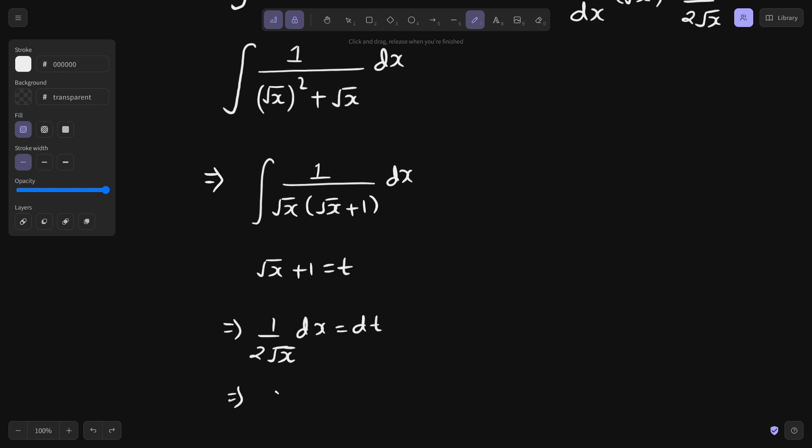So dx by root x can be substituted by 2 dt. So if you look at this step, dx by root x is 2 dt and in the denominator you have one more bracket, that is t.